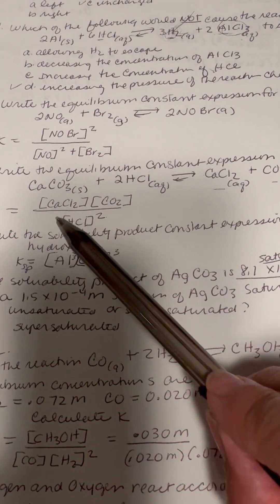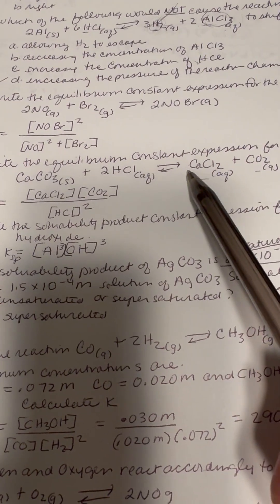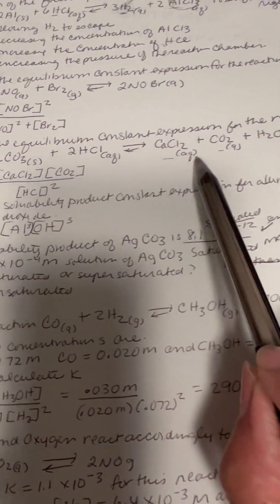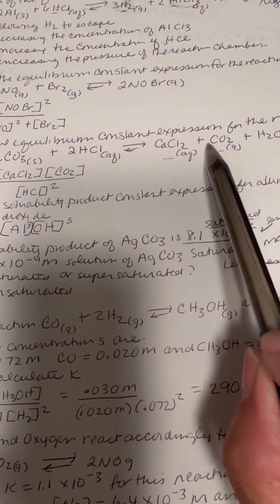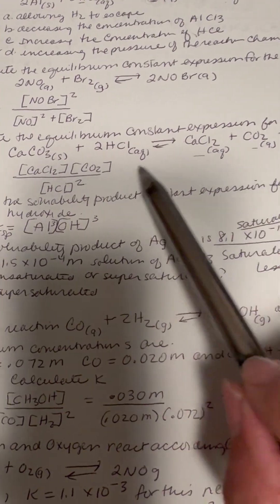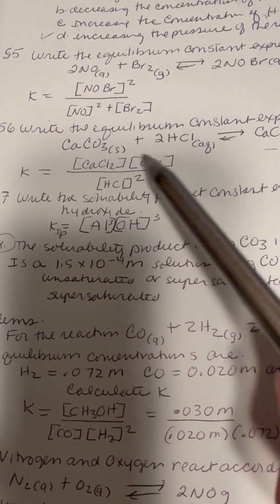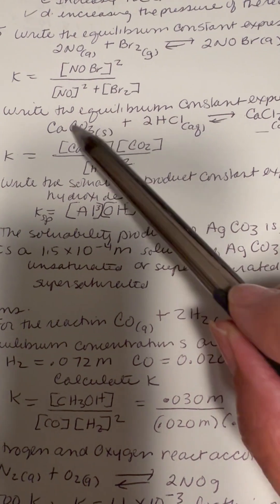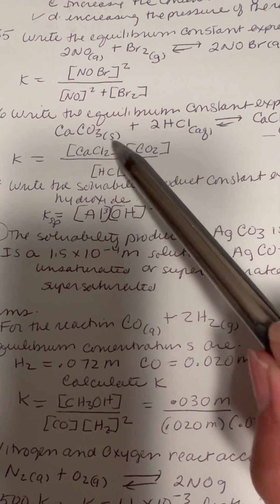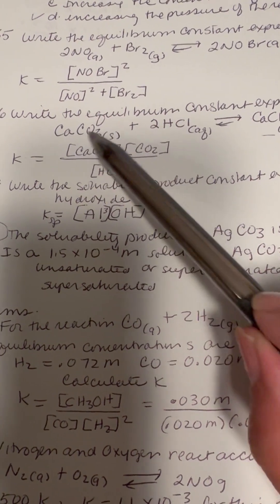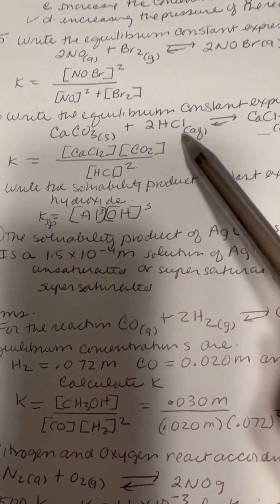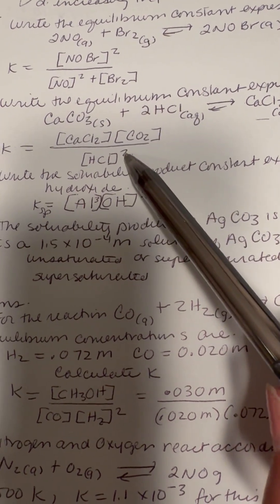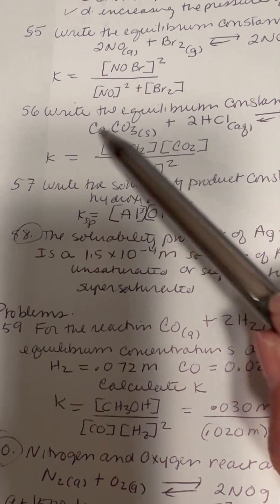We put down calcium chloride — there's no coefficient, so no exponent needed. K equals calcium chloride times CO₂; carbon dioxide has no coefficient so we just put CO₂. Calcium carbonate is a solid — we never count solids and we never count liquids, so we leave it out. We put HCl in the denominator; it has a coefficient, so we put that as an exponent. This is our answer for number 56.